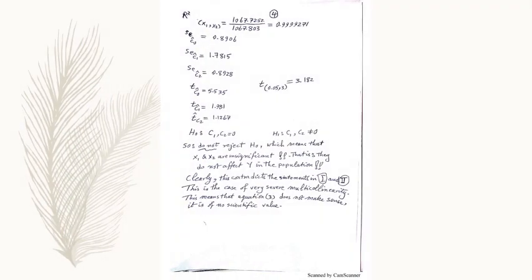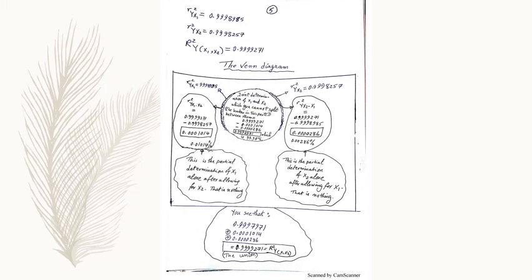This means that we are considering a very severe multicollinearity. This means that equation 3 does not make any sense. It is of no scientific value. Consider the Venn diagram appearing now. You have found that the joint determination of X1 and X2, which you cannot split,